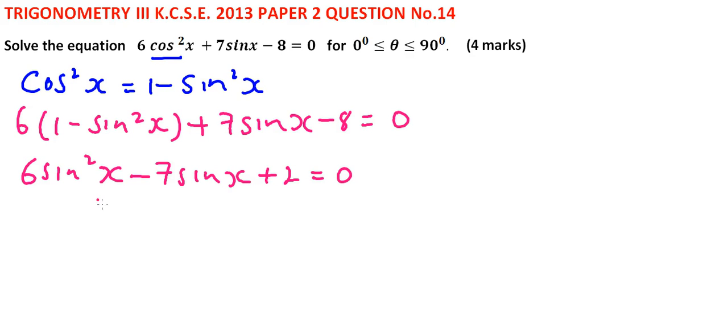We solve this quadratic equation using the factor method and you end up with two factors. These are 3 sin x minus 2, close the bracket, and 2 sin x minus 1 equals 0. So these are the two factors.